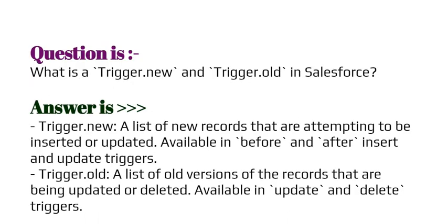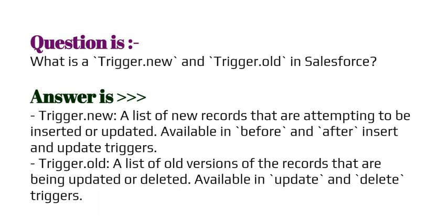Our next question is: what is Trigger.new and Trigger.old in Salesforce? Trigger.new is a list of new records that are attempting to be inserted or updated, available in before and after insert and update triggers. Trigger.old is the list of old versions of the records that are being updated or deleted, available in update and delete triggers.